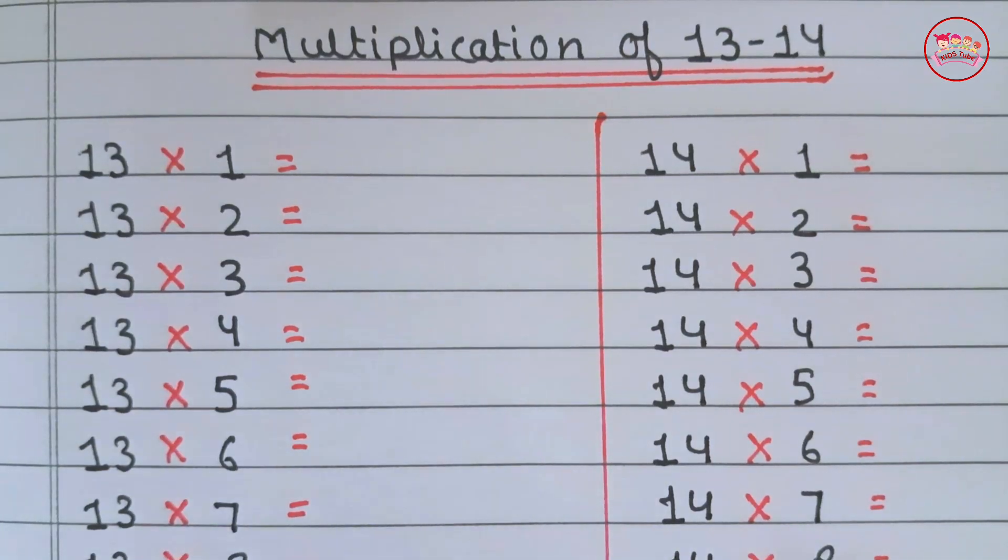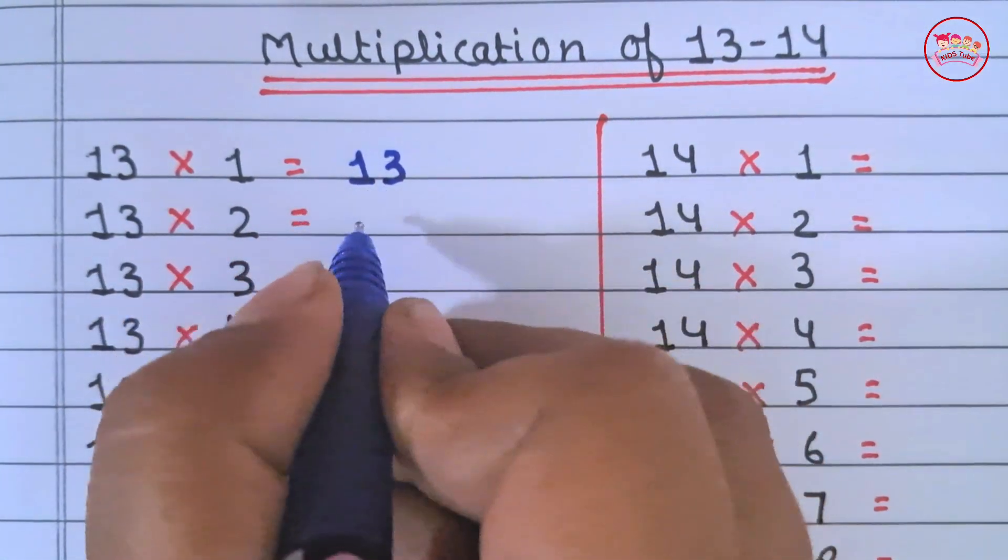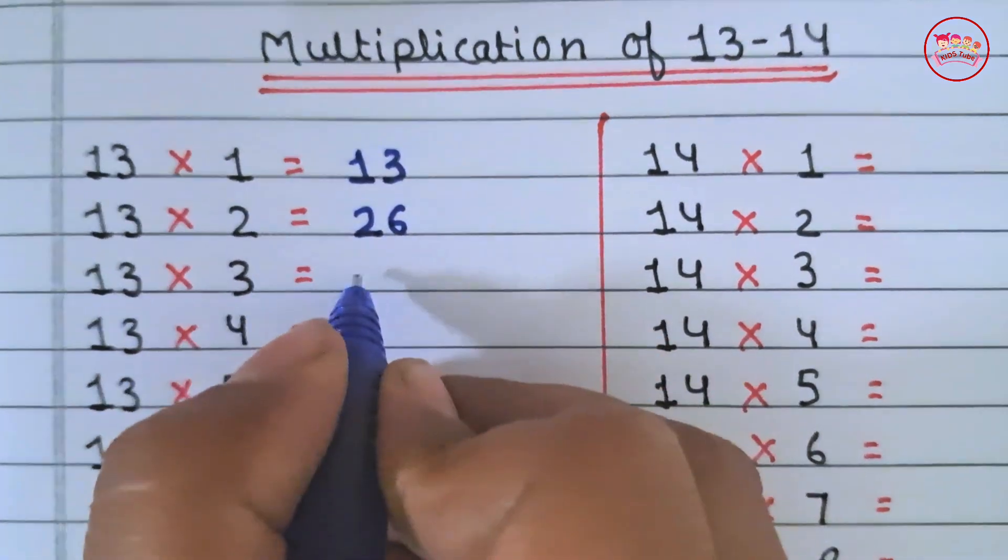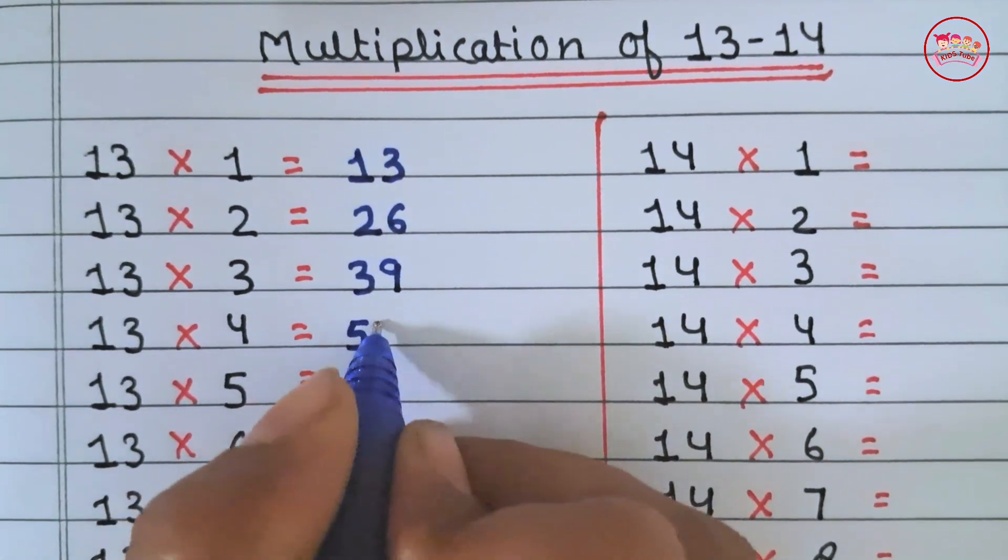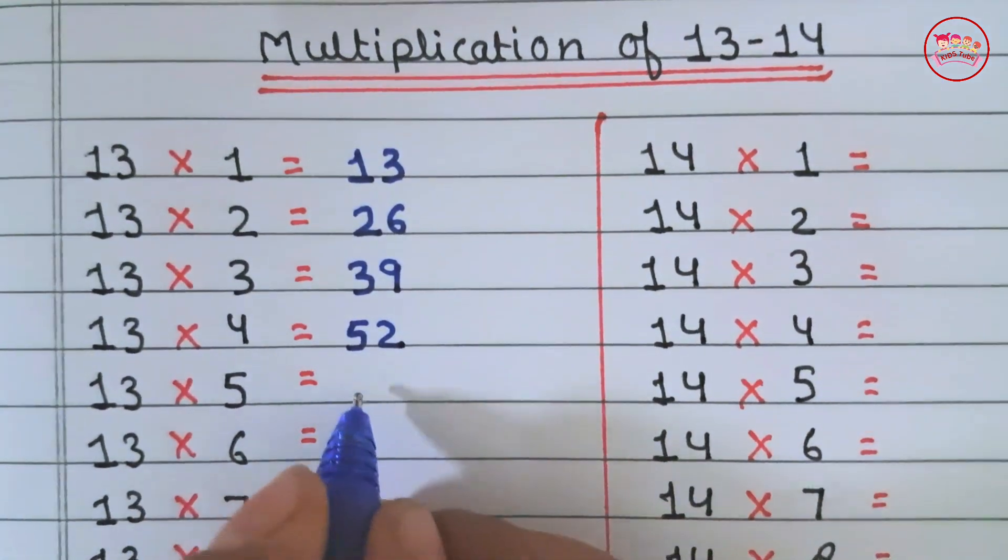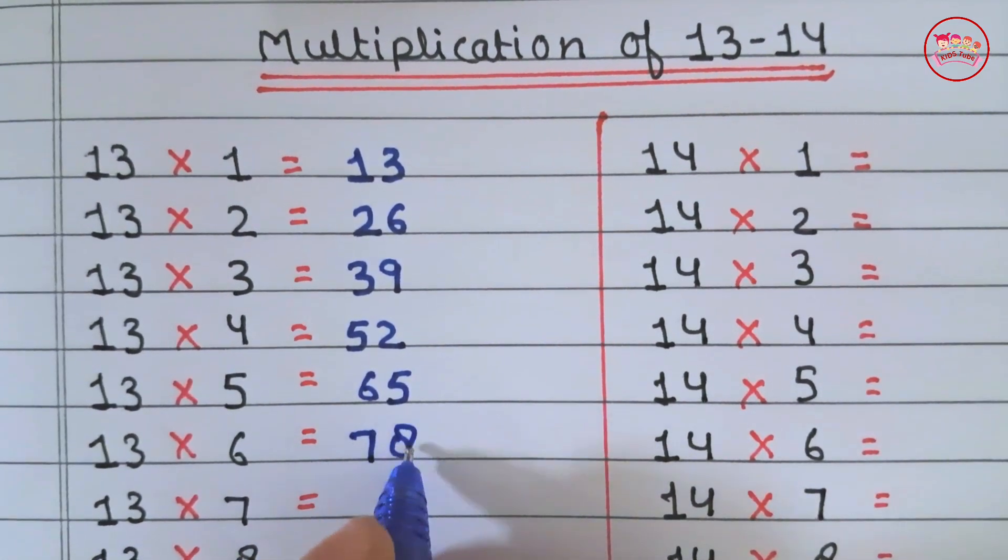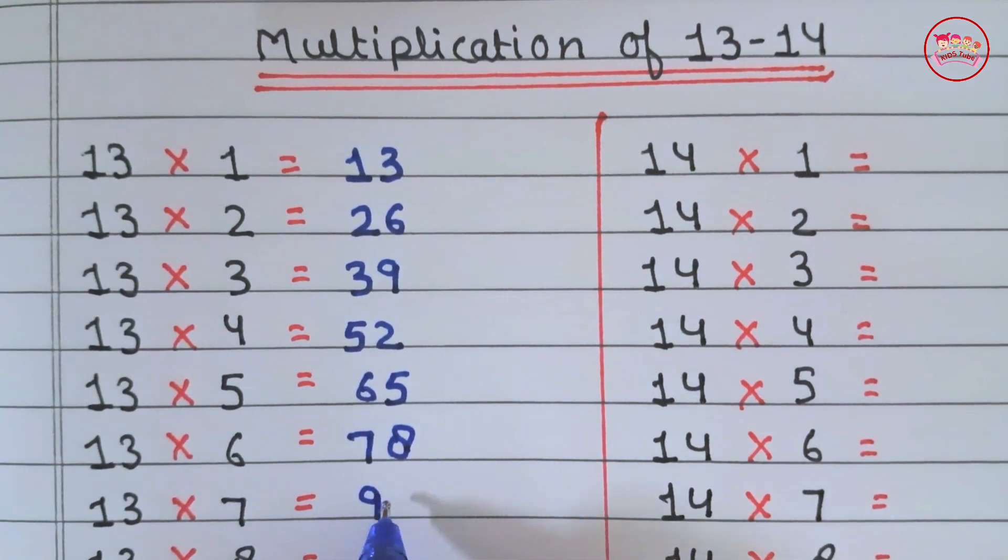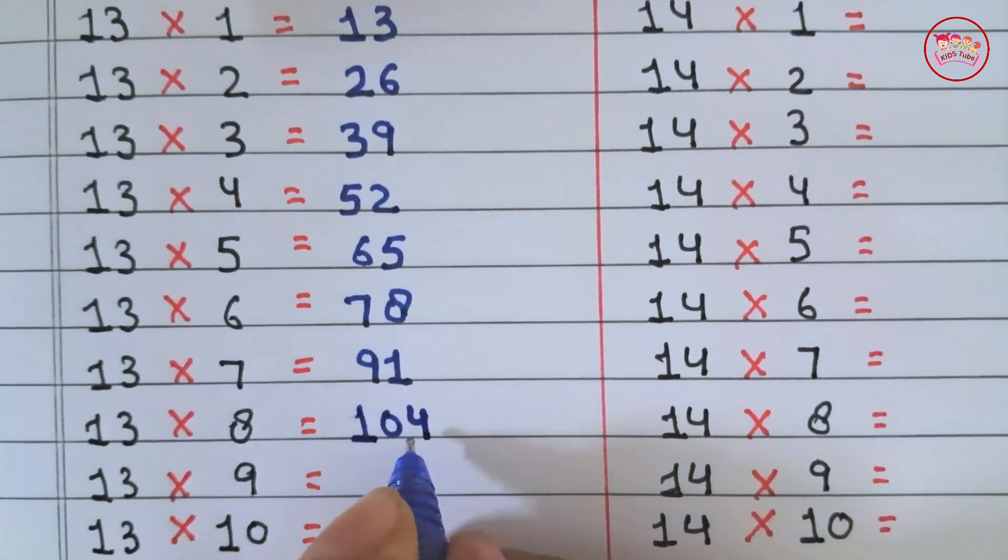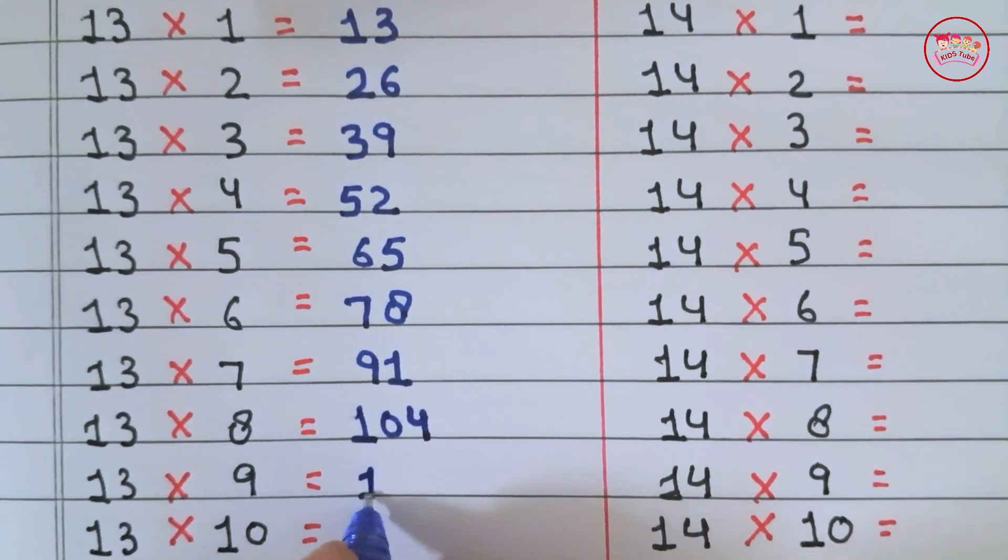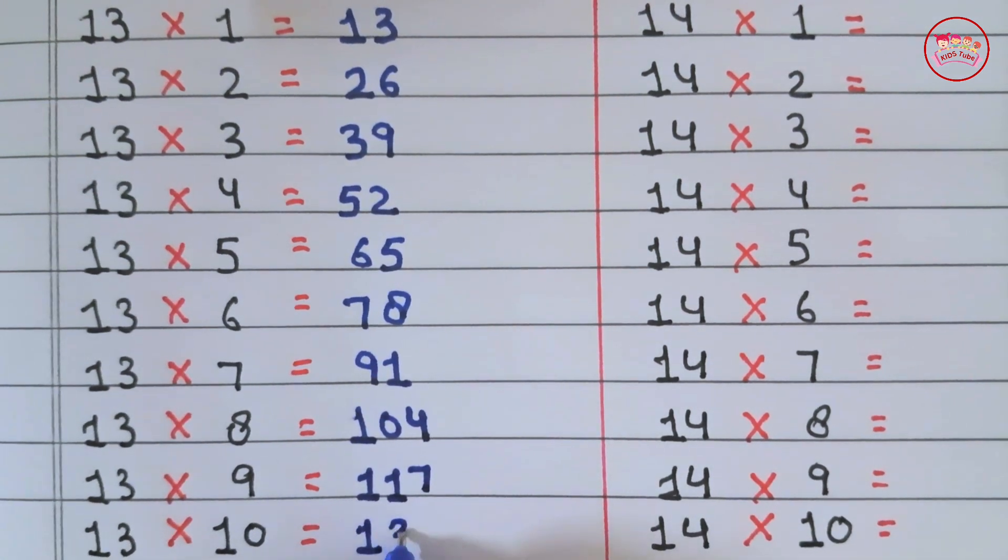Multiplication of 13 and 14. 13×1 is 13, 13×2 is 26, 13×3 is 39, 13×4 is 52, 13×5 is 65, 13×6 is 78, 13×7 is 91, 13×8 is 104, 13×9 is 117, 13×10 is 130.